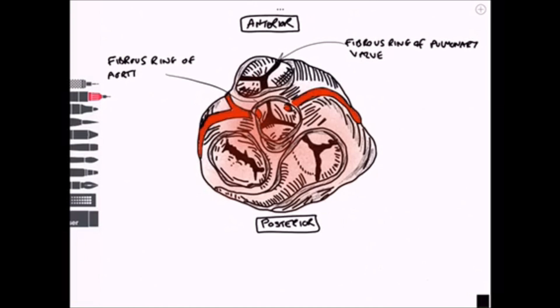Next we can label the fibrous ring of the aortic valve which can be seen next and you can see the coronary arteries coming from there that shows that it's the aortic valve.